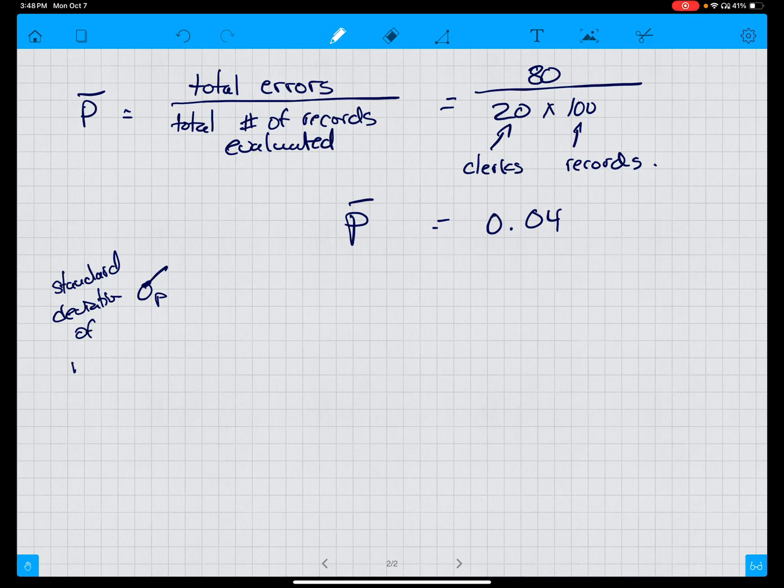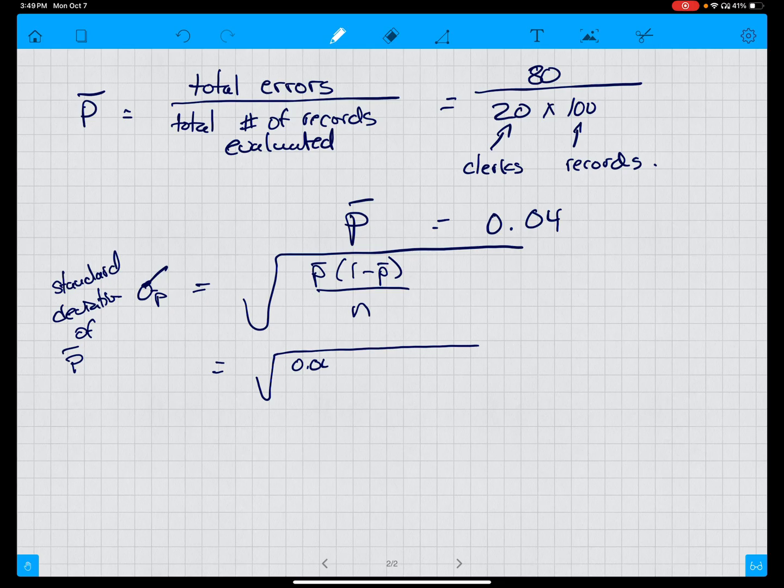Sigma p, or the standard deviation of p-bar, is equal to the square root of p-bar times one minus p-bar over n, which is equal to the square root of 0.04 times one minus 0.04 divided by a hundred.